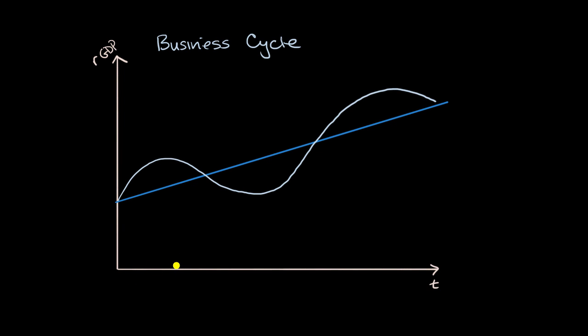What we have depicted in this diagram is the business cycle that we have looked at in other videos. This horizontal axis is time, vertical axis is real GDP. What we see in this dark blue color, you can view that as full employment output at different points in time.